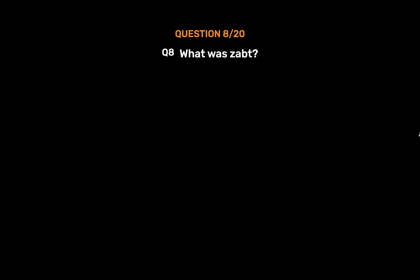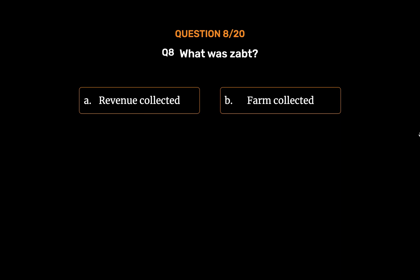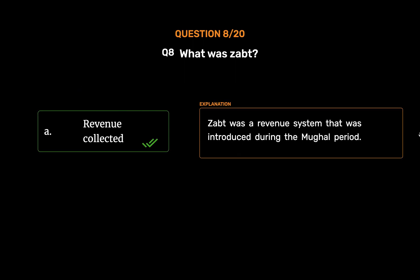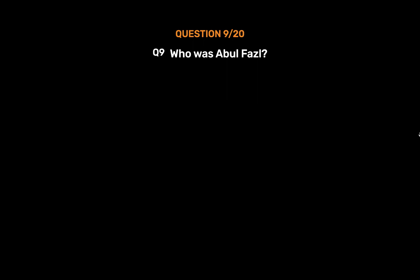Question 8: What was Zabt? Option A: Revenue collected. Option B: Farm collected. Option C: Cattle collected. Option D: None of these. The correct answer is Option A, Revenue collected. Zabt was a revenue system that was introduced during the Mughal period.